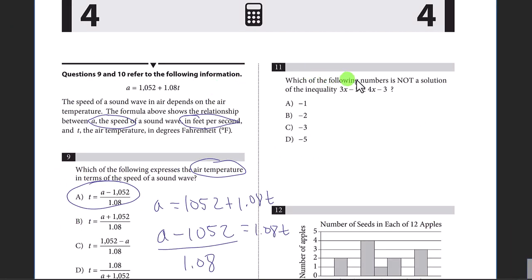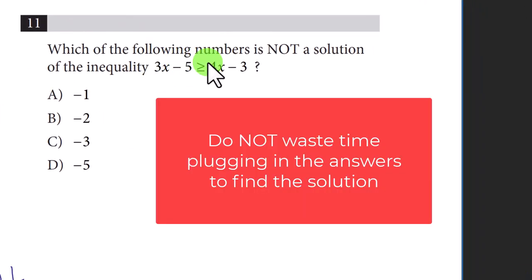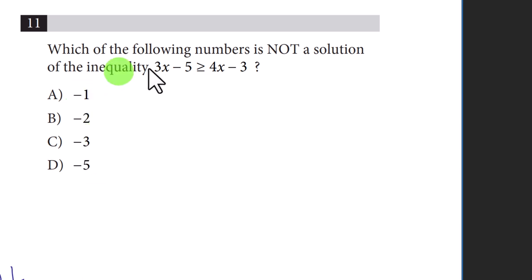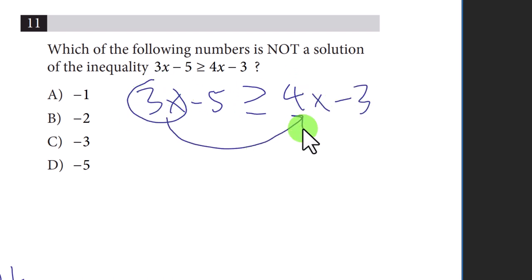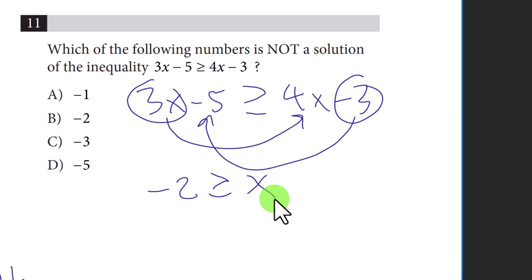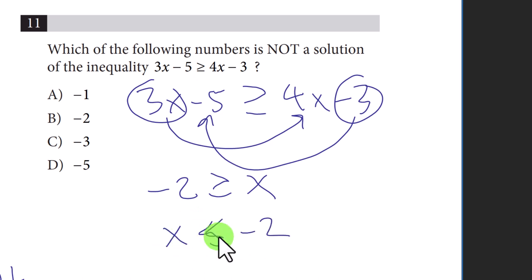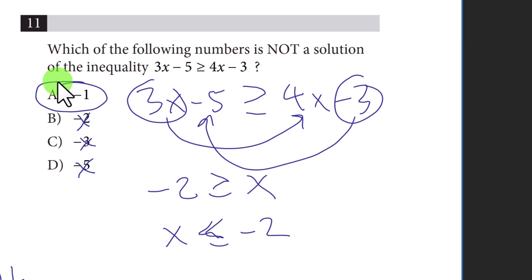Question eleven: which number is not a solution of the inequality? Don't plug in all four choices — simplify instead. Starting with 3x minus 5 greater than or equal to 4x minus 3, rearranging gives negative 2 greater than or equal to x, i.e., x is less than or equal to negative 2. All three choices work except A — much faster than plugging in.